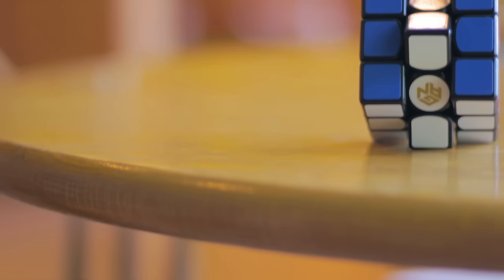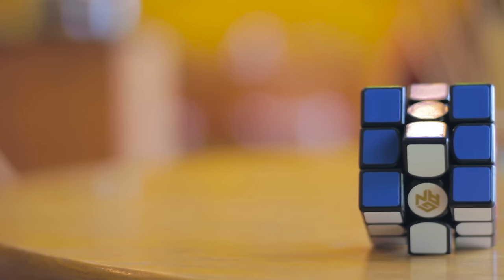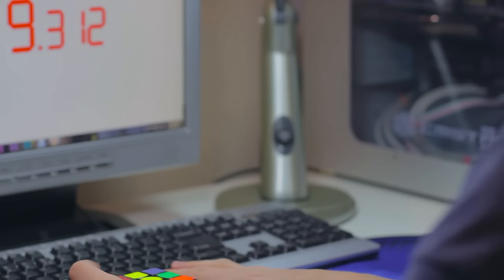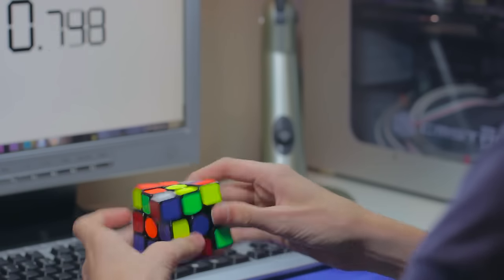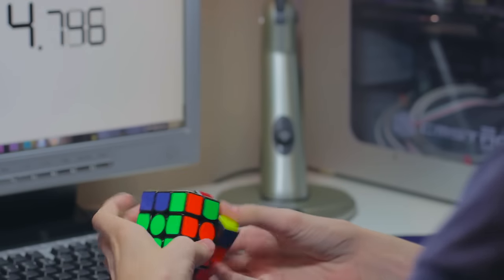This is the Gans 356S version 2. It's 56 millimeters, obviously, has nice stickers, doesn't pop, and has amazing corner cutting both forward and reverse. Just like any other recent 3x3.